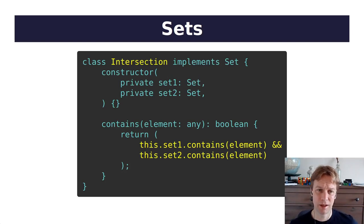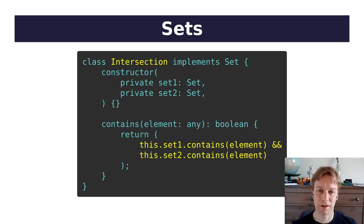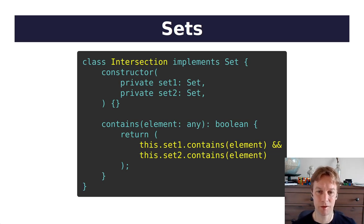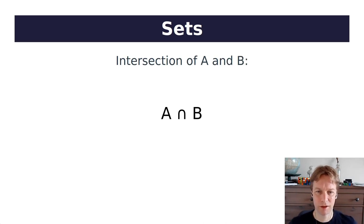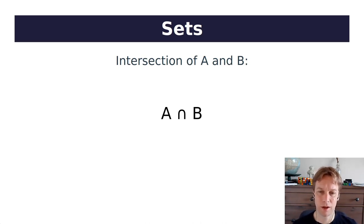This is another type of set which takes two sets and does something with them, and it's called an intersection. Given two sets, set1 and set2, the intersection just does what we've implemented in this contains method: given something, the answer is yes if set1 contains it and set2 contains it. So the intersection contains all the things that are in both set1 and set2 — it's where they overlap, where they intersect. Here's how we write it in maths: A intersect B, like an upside-down U. That means a new set containing only the elements that are in both A and B.